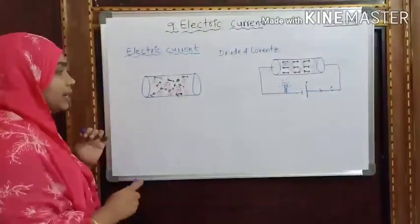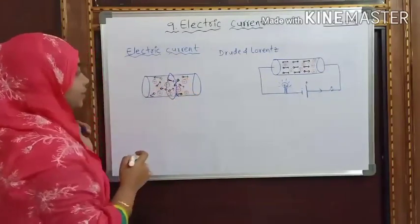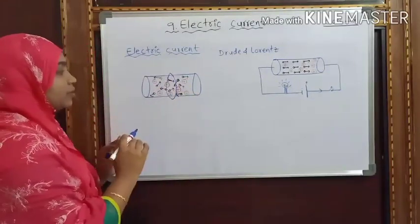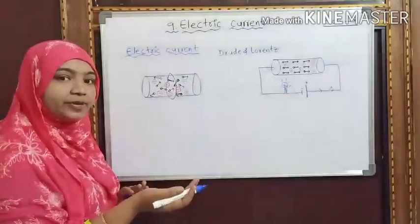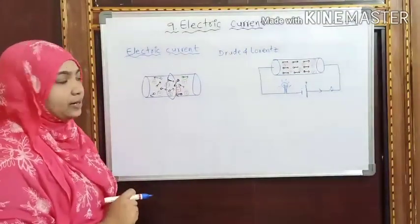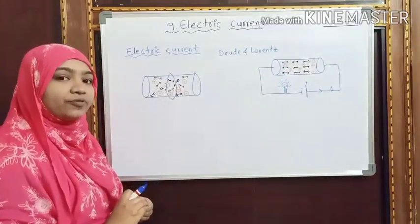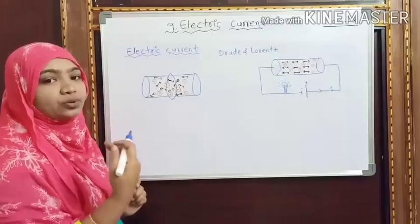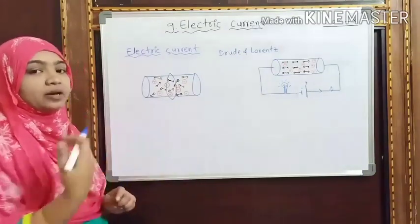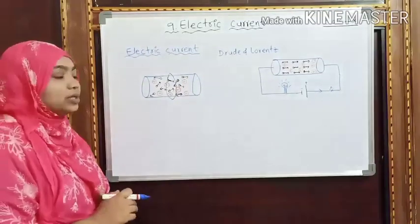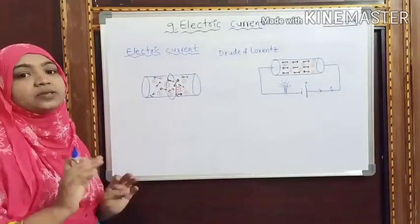Let us consider any cross section of this conductor. The number of electrons passing from right to left and from left to right — in one second, the number of free electrons passing from right to left is equal to the number passing from left to right. So there is no net charge flow for this conductor which is in an open circuit.